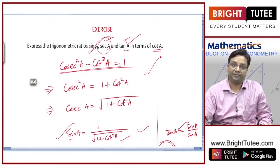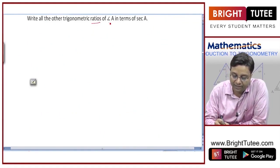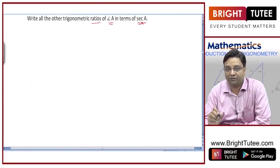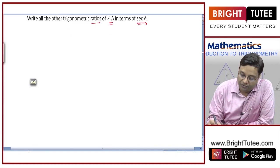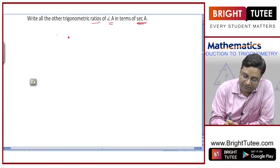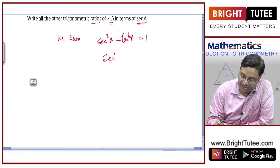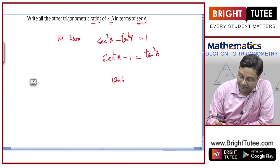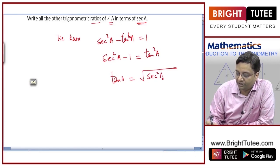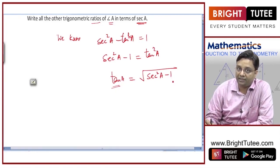Now we have to write all other trigonometric ratios of angle A in terms of secant a. Using the identity method: the identity involving secant a is secant squared a minus tan squared a equals one. So tan squared a equals secant squared a minus one, and therefore tan a equals square root of secant squared a minus one.